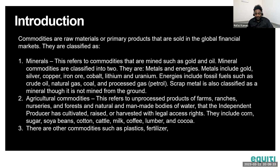The other classification is agricultural commodities — unprocessed products of farms, ranches, nurseries, forests, and natural or manmade bodies of water that independent producers have cultivated, raised, or harvested. They include corn, sugar, soybeans, cotton, cattle, milk, coffee, lumber, and cocoa.